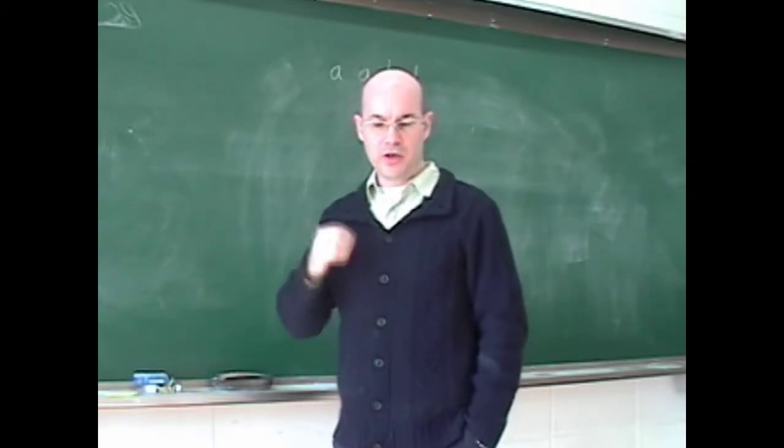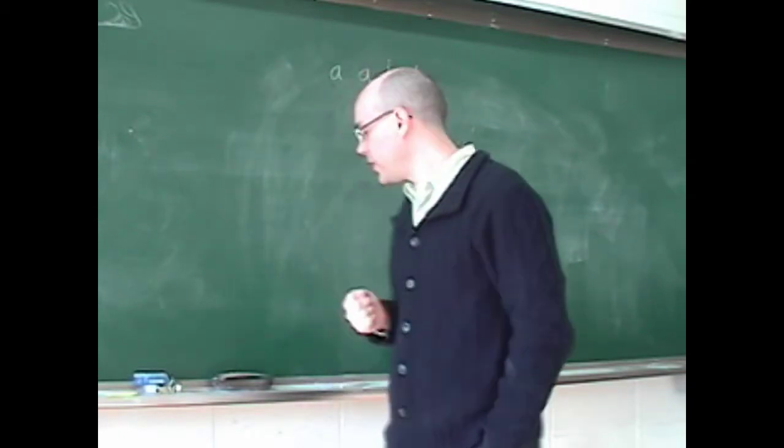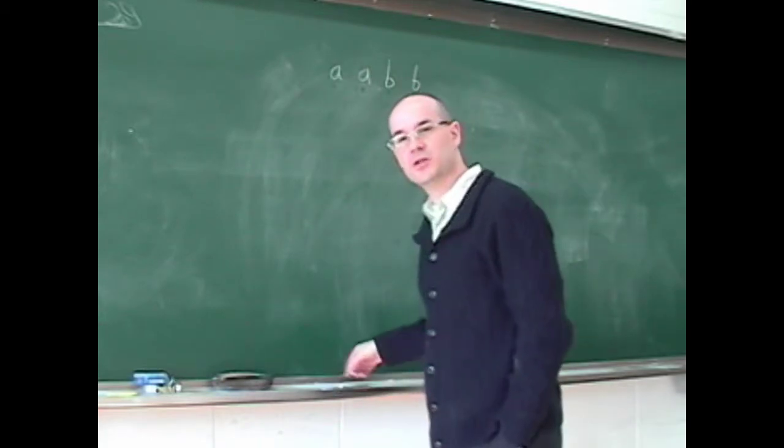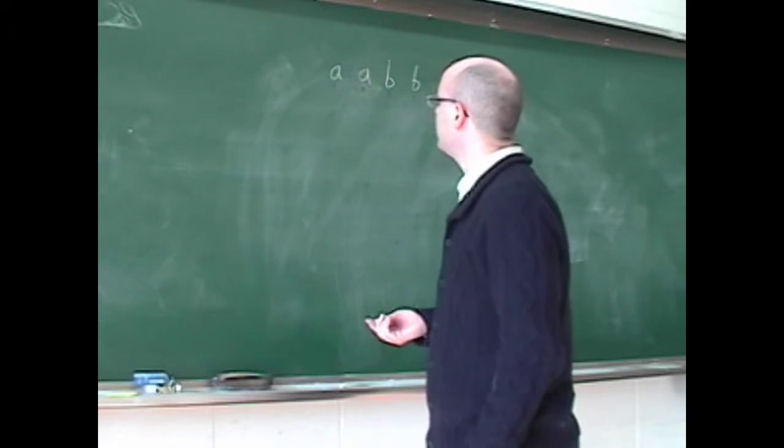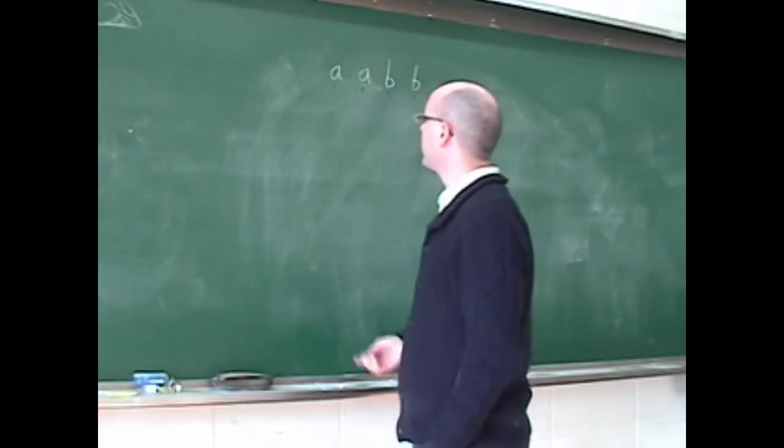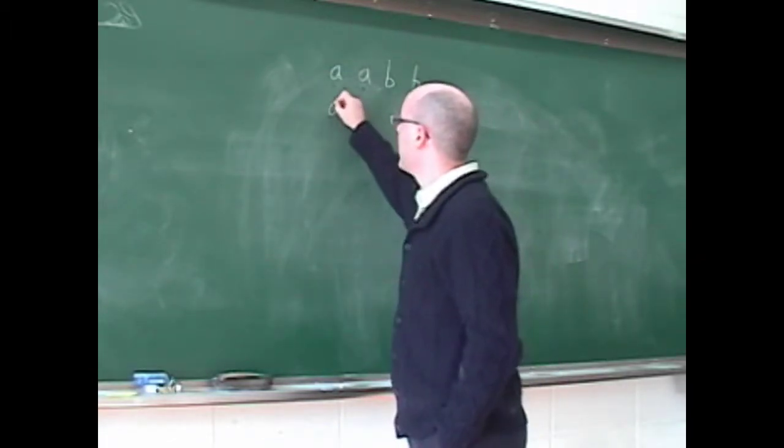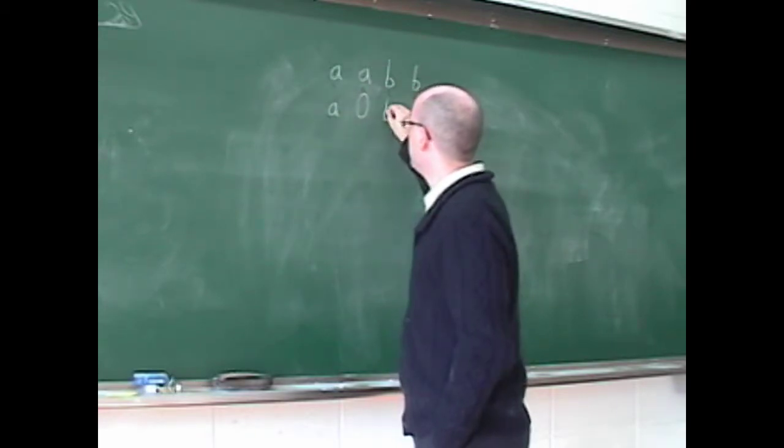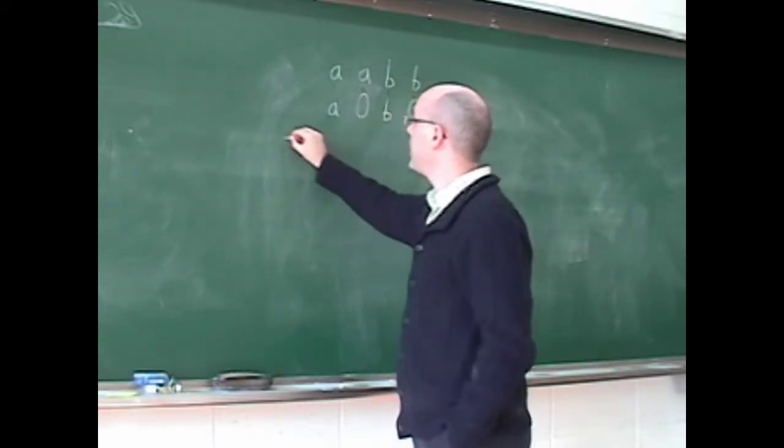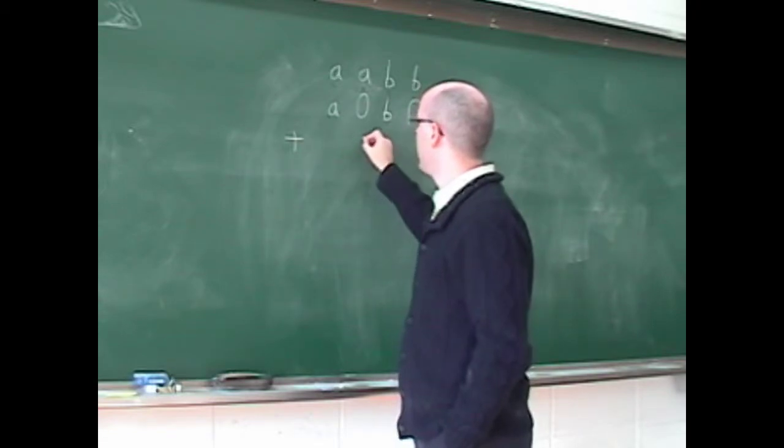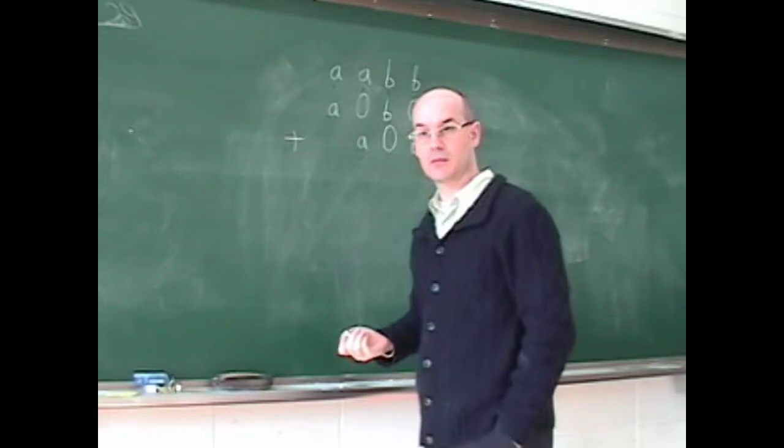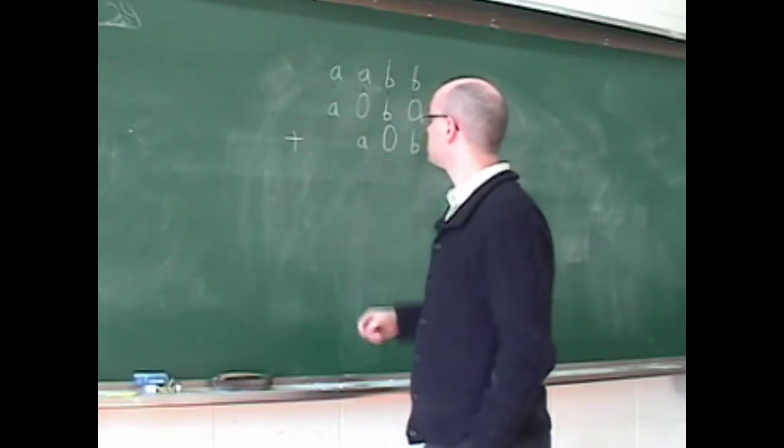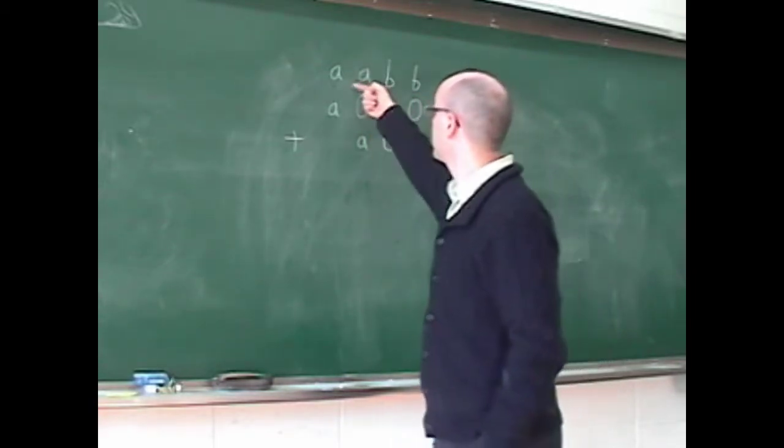So we know that this is a perfect square, but we're not going to use it right away. One easy way to solve this problem is to say that this number is actually A0B0 plus a number called A0B. If you add up this, it's going to work and make this number.